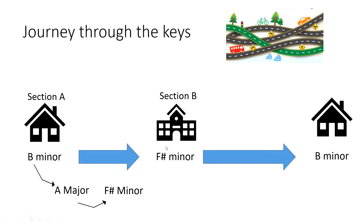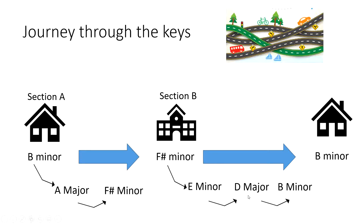When we arrive at Section B we're in F sharp minor, but he doesn't stay there for long. He modulates, quickly changing key to E minor, then changes key again to D major, and from there he modulates to B minor.